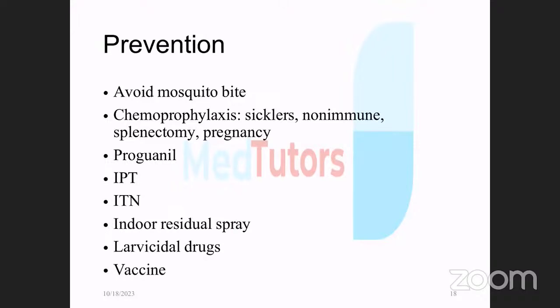To prevent malaria, the primary strategy is avoiding mosquito bites through all available means. Chemoprophylaxis is given to sickle cell patients, splenectomized patients, pregnant women, and travelers from non-endemic countries. Proguanil is used for sickle cell patients, IPT with fansidar for pregnant women. Other measures include insecticide-treated bed nets, indoor residual spraying, larvicidal drugs, and a vaccine that is still under development.